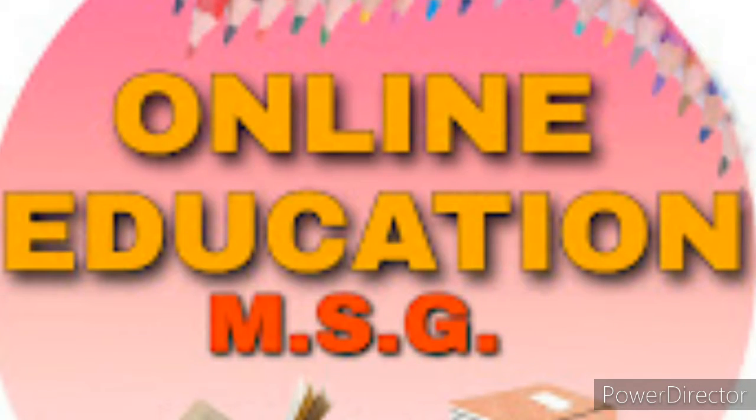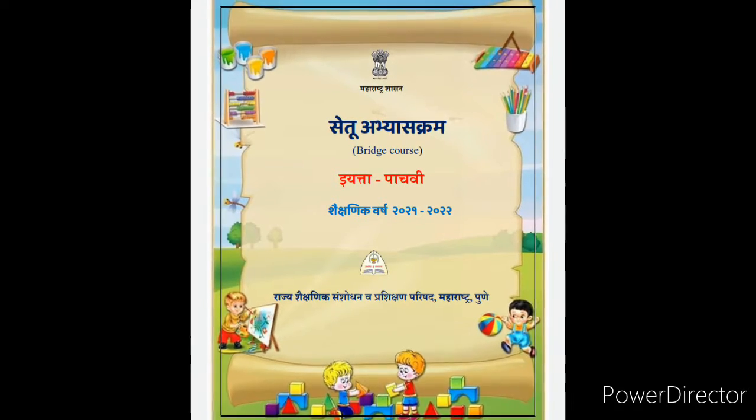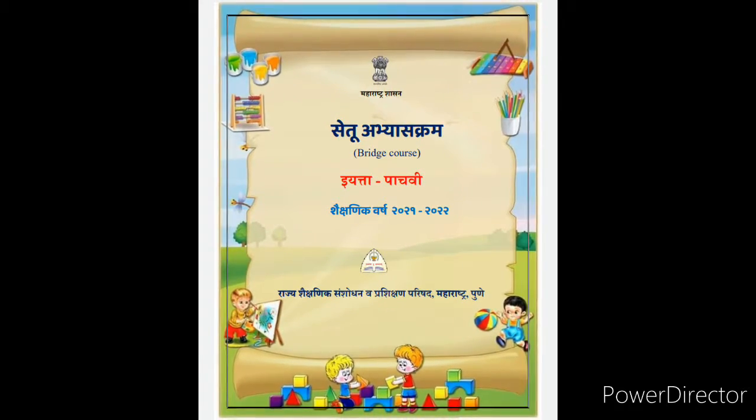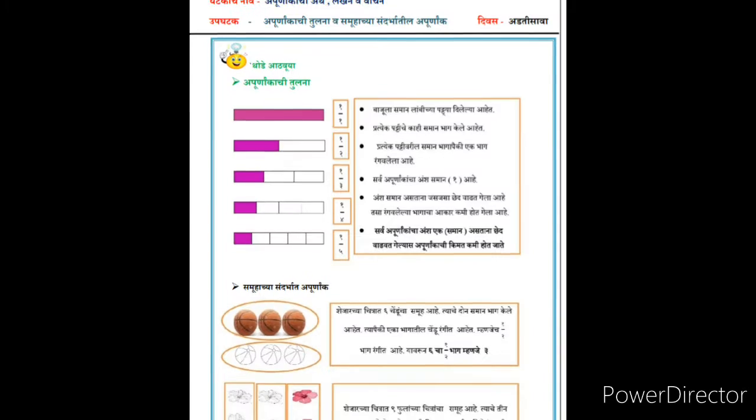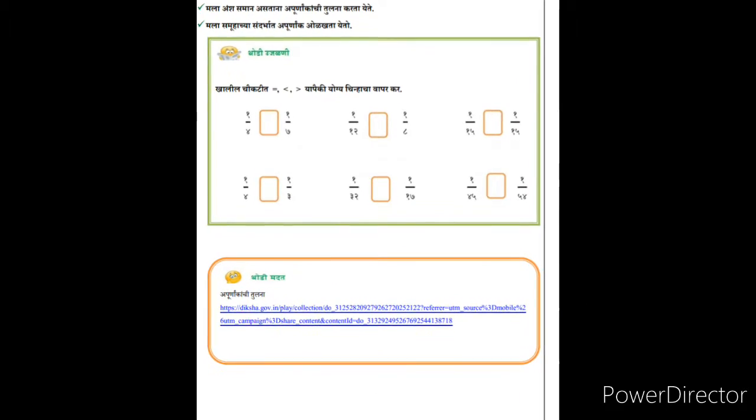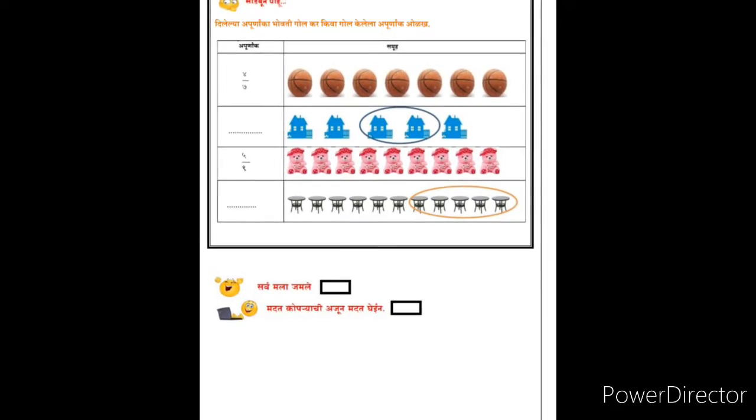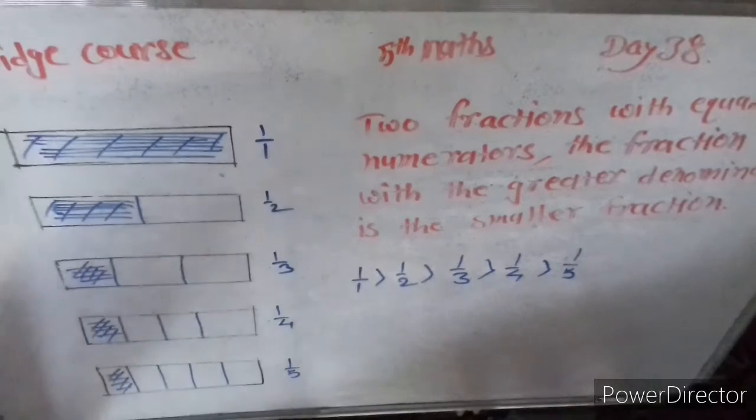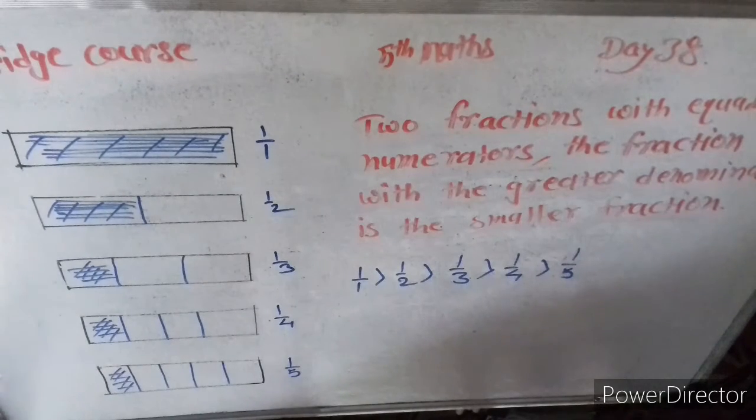Hello students, today bridge course day 38, we learn about fifth standard mathematics, the smallest, biggest, like and unlike fractions. Start now comparing fractions with equal numerators. You have learned that the value of fraction with numerator one decreases as the denominator increases.